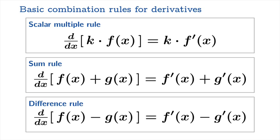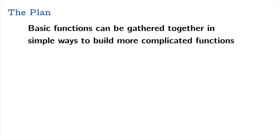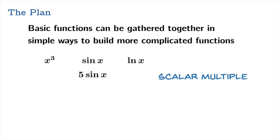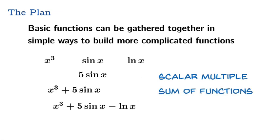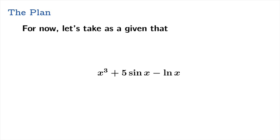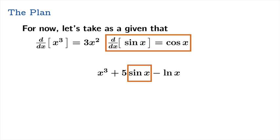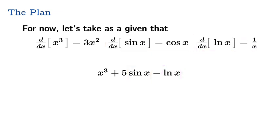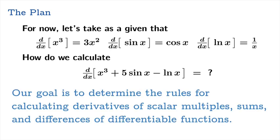Our goal today is to prove all these rules. Basic functions can be gathered together in simple ways to build more complicated functions. Taking as a given that the derivative of x cubed is 3x squared, the derivative of sin x is cosine, and the derivative of ln x is 1 over x — the question is how do we calculate the derivative of a combination of these functions? Our goal is to determine the rules for calculating derivatives of scalar multiples, sums, and differences of differentiable functions.